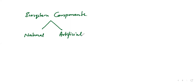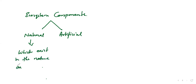Natural ecosystem means what already exists in nature on its own — things like forest, lake, ocean, and all those stuff.